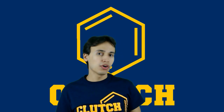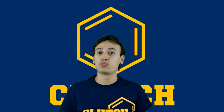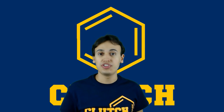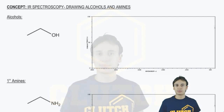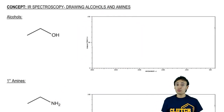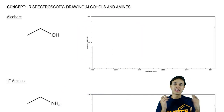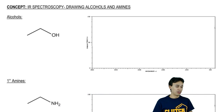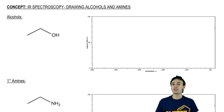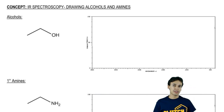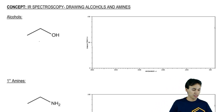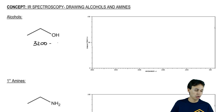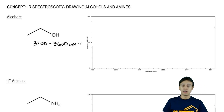Now we're going to move on to drawing and recognizing functional groups with hydrogen in them. These are going to be alcohols and amines. The first thing we want to focus on is probably the granddaddy of all absorptions, and that's alcohol. Alcohols are one of the broadest absorptions there is, and they absorb from 3,200 all the way to 3,600.